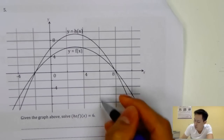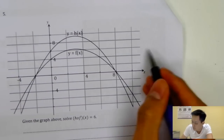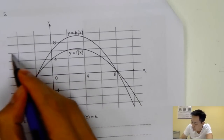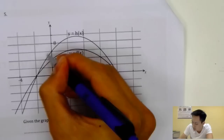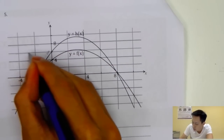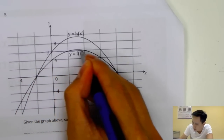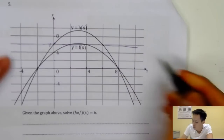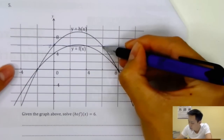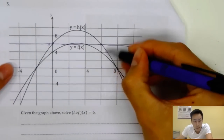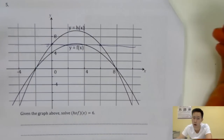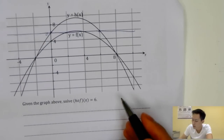Most students would just draw a line from six — so four, eight, and six — and then just write like x equals zero and five, or zero and six. But that's wrong.